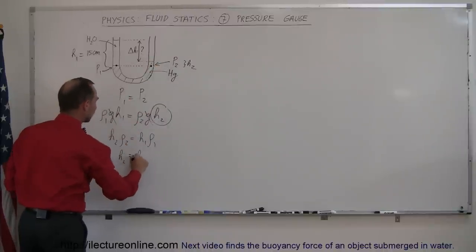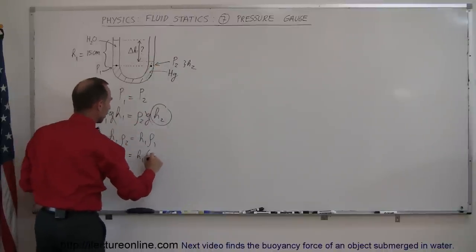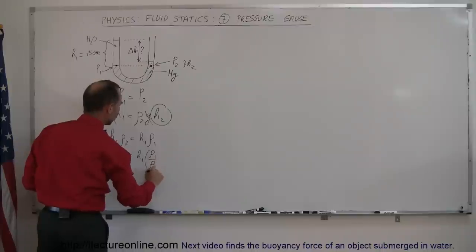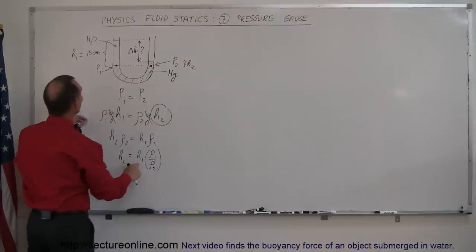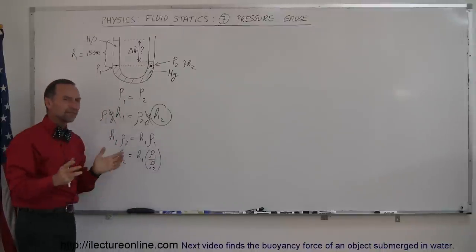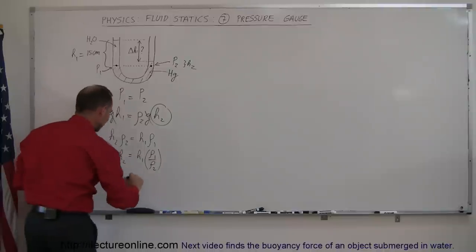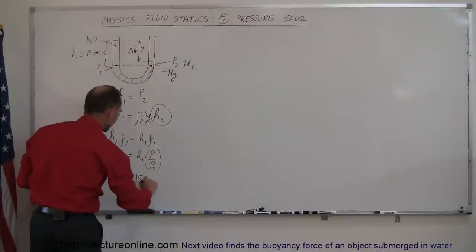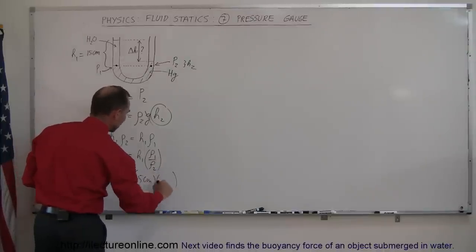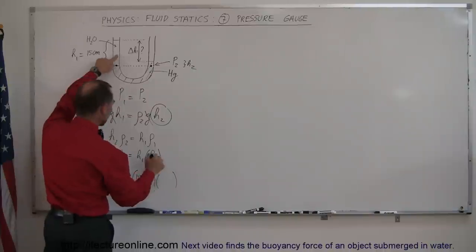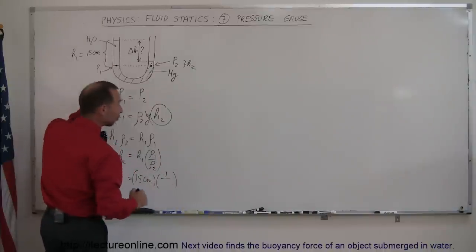Right, h1 is 15 centimeters and I can leave it in centimeters because I'm just going to get the answer in centimeters. So this is 15 centimeters times the ratio of density 1, which is the density of water, which can be written as 1 gram per cubic centimeter, divided by the density of mercury, which can be written as 13.6 grams per cubic centimeter.